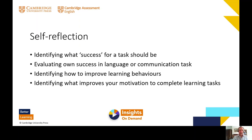The third area is self-reflection, and there are a number of elements to this. One is identifying what success for a task should look like — if you're going to do a presentation, how do you want it to sound? Then as a learner being able to evaluate your success — did you do it well, what could you have done better? That strays into the third point: identifying how to improve learning behaviours — for example, finding that you do much better when you prepare a speaking task by making brief notes. And identifying what improves your motivation to complete learning tasks is another aspect of self-reflection.